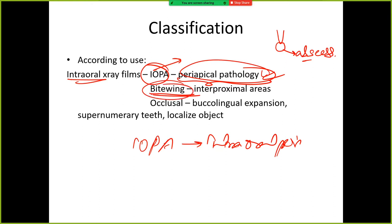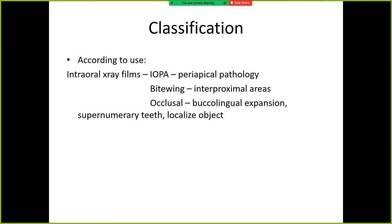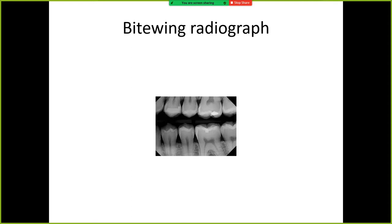Have you seen a bite wing? Bite wing — what is it used for? Bite wing is used for interproximal areas — mesial or distal areas — to see caries. So this is a bite wing radiograph. Bite means upper and lower both are visible. So bite wing is used for proximal areas.